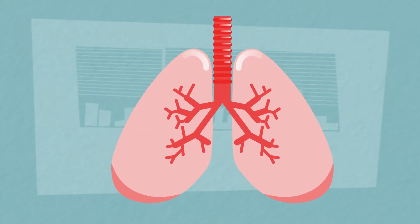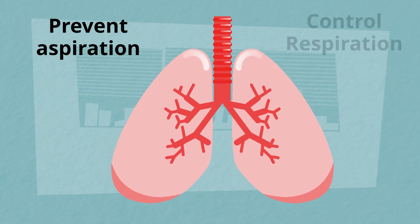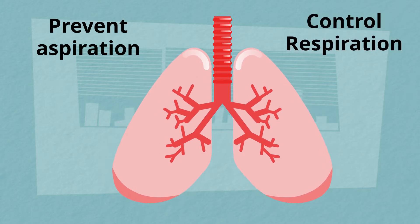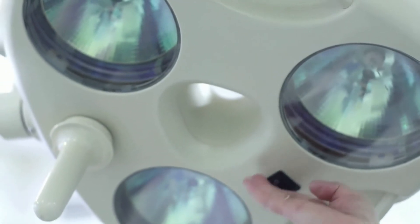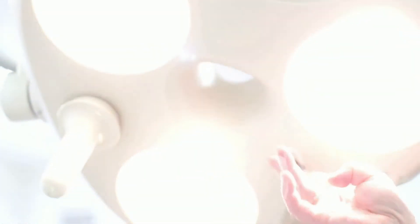During general anesthesia, the breathing tube is often placed to prevent aspiration and control breathing for the patient, so the surgery or medical procedure can be performed with safety and comfort as the priority for the patient.